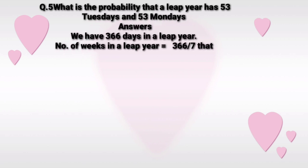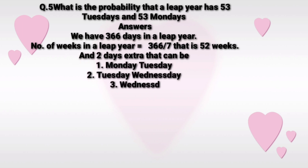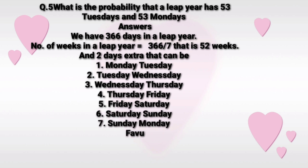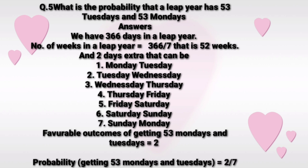Question 5: What is the probability that a leap year has 53 Tuesdays and 53 Mondays? In a leap year, 366 days = 52 weeks + 2 extra days. The 2 extra days combinations are: Sunday–Monday, Monday–Tuesday, Tuesday–Wednesday, Wednesday–Thursday, Thursday–Friday, Friday–Saturday, Saturday–Sunday — 7 total. Monday and Tuesday appearing together occurs 2 times (Monday–Tuesday and Sunday–Monday). So probability = 2/7.